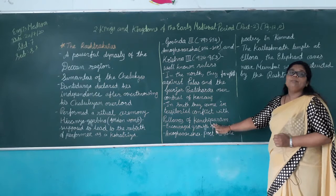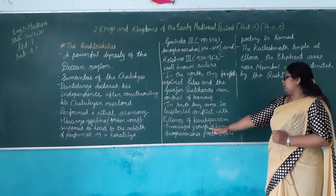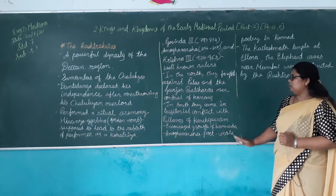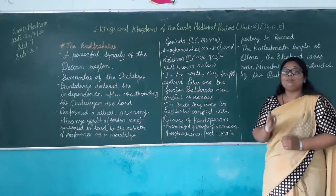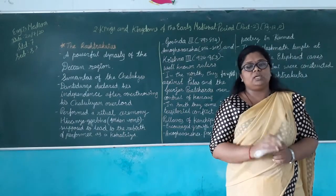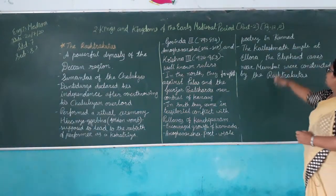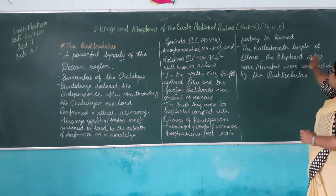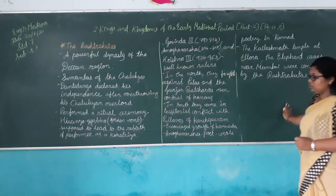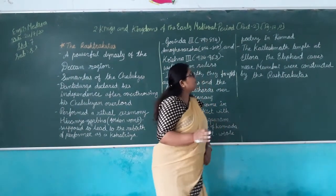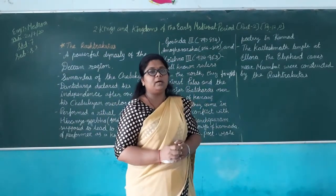In the south, they came into territorial conflict with the Pallavas of Kanchipuram. The Rashtrakutas also encouraged the growth of the Kannada language. Amoghavarsha was a poet himself and wrote poetry in Kannada. The Kailashnath temple at Ellora and the Elephanta Caves near Mumbai were constructed by the Rashtrakutas.